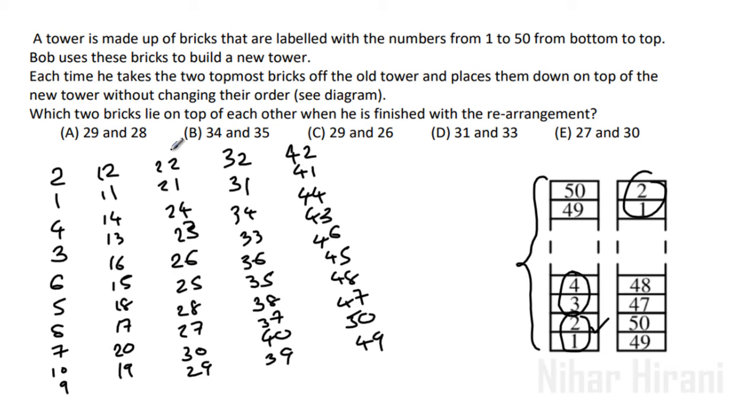So now let me check all the choices. 29 and 28. So 29 is here and 28 is here. This is wrong. 34, 35. So 34 is here, 35 is here. No.